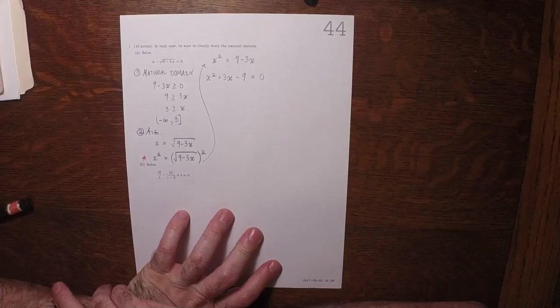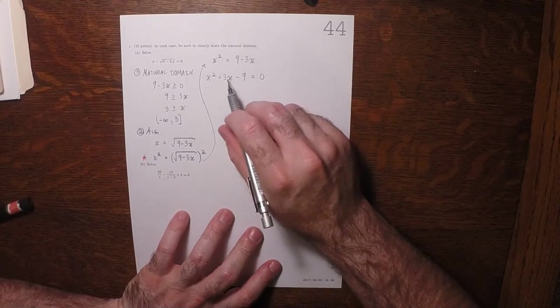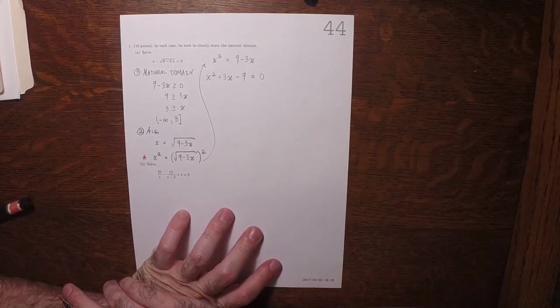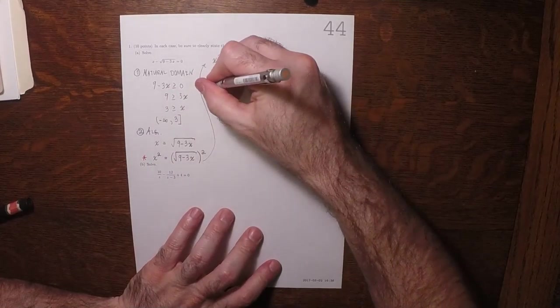Can we factor this in the easy way? Two numbers whose product is negative 9 and whose sum is 3. Well, 1 and 9 won't do it. 3 and 3 won't do it. So I guess we'll have to use the quadratic formula.